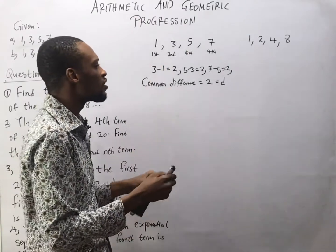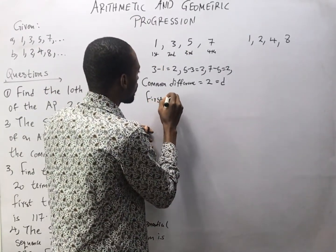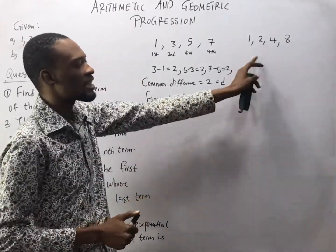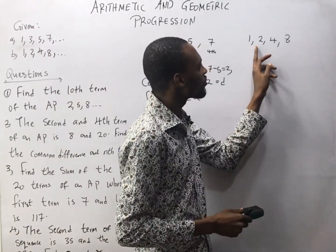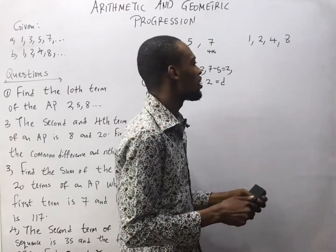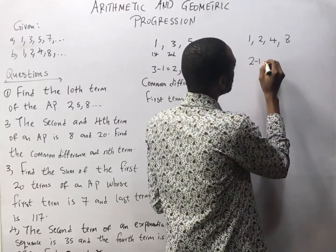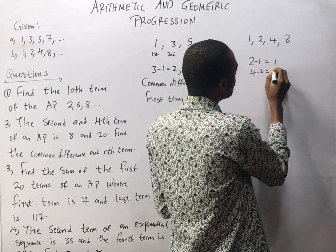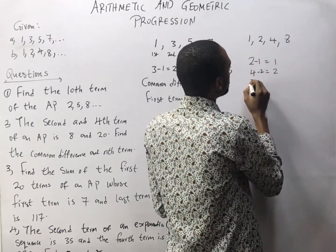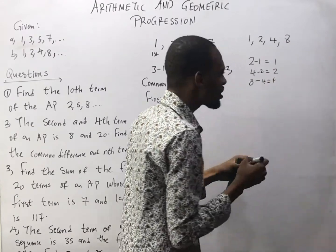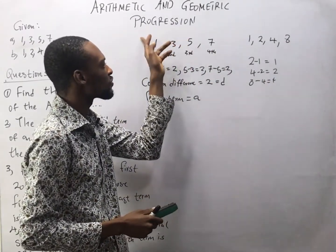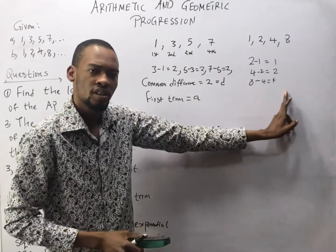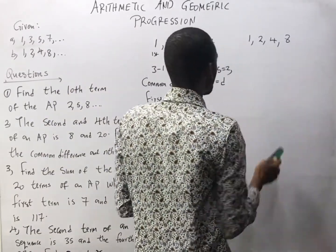D equals 2, and the first term is 1. We call the first term A. Now let's go to sequence B: 1, 2, 4, and 8. If I say 2 minus 1, it equals 1. 4 minus 2 equals 2. 8 minus 4 equals 4. You notice it didn't follow this pattern where second minus first equals third minus second equals fourth minus third. It's not following.